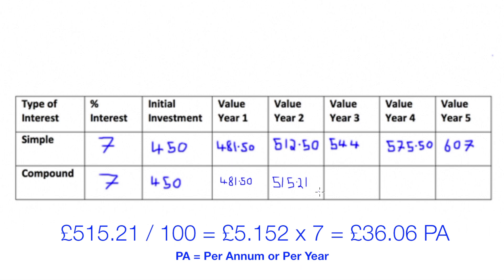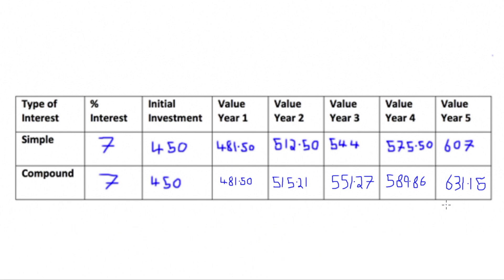To find the value of year three, we do the same thing again using year two's total of £515.21, dividing it by 100 to get £5.15, and times it by seven to get £36.06 interest. At the end of year three we get a total value of £551.27. If we repeat the same procedure through to the end of year five, we realise that we now have £631.15 in our compound interest account, compared to the simple account where we only got £607. Compound interest gives you more money over a fixed amount of time.